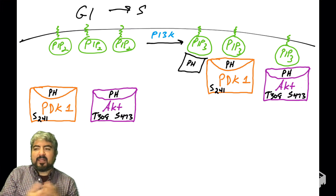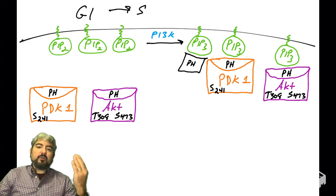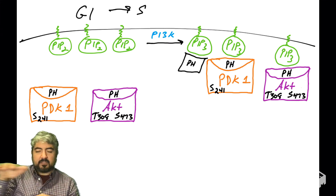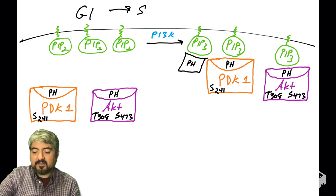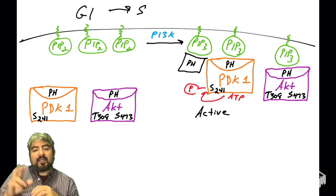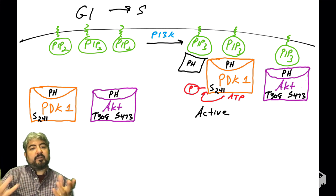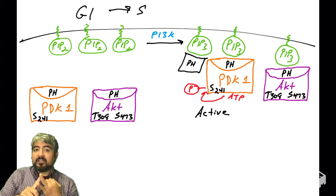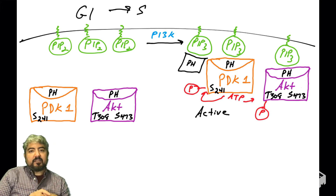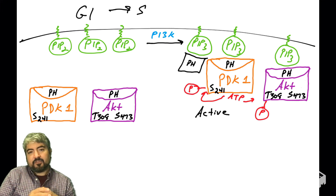When PDK1 binds PIP3, that binding triggers its activation. PDK1 then phosphorylates itself on serine 241, helping maintain its active state. Now active and near its other substrate, PDK1 phosphorylates AKT on threonine at position 308.